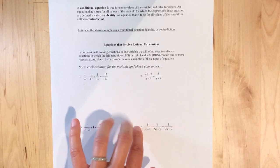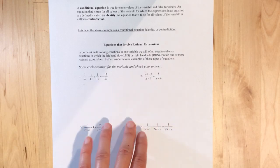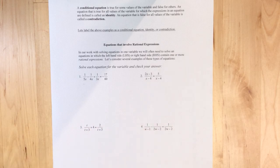And actually, I'm going to add in an example to make it a little harder because you're going to see them on the homework. So I may actually skip. Well, no, I won't skip, but I'll add. So in our work with solving equations in one variable, we will often need to solve equations with the left-hand side or the right-hand side contain one or more rational expressions.